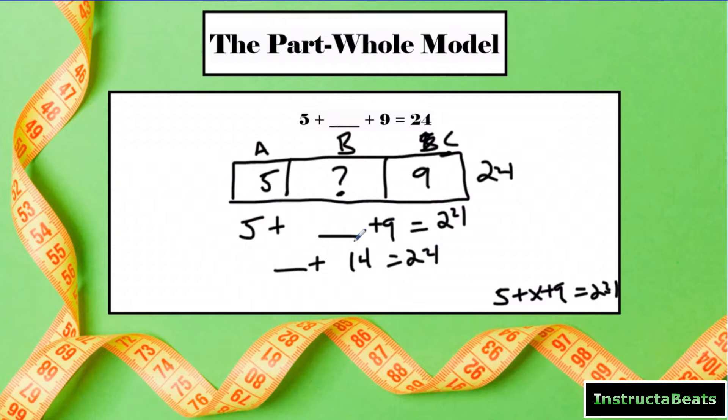And so now you could guess and check here, but you want to show that relationship between addition and subtraction, those inverse operations. And what you're trying to do is get rid of the nine and five to find this missing question mark.